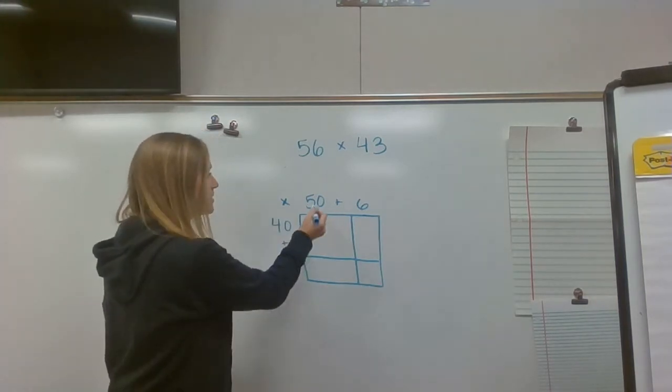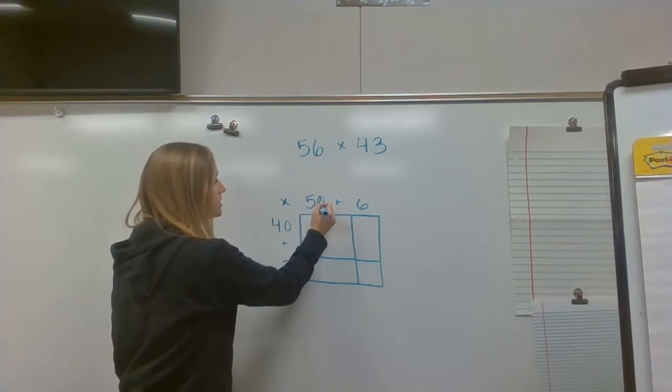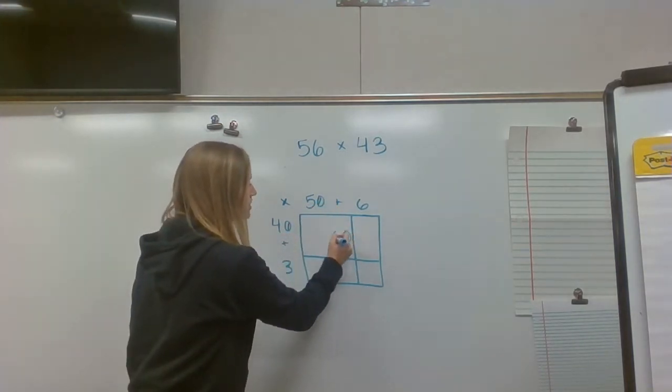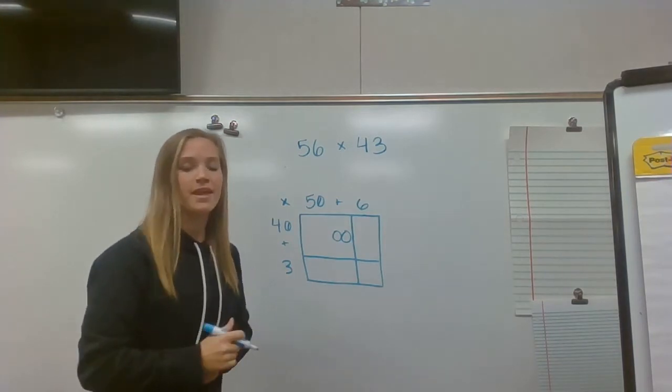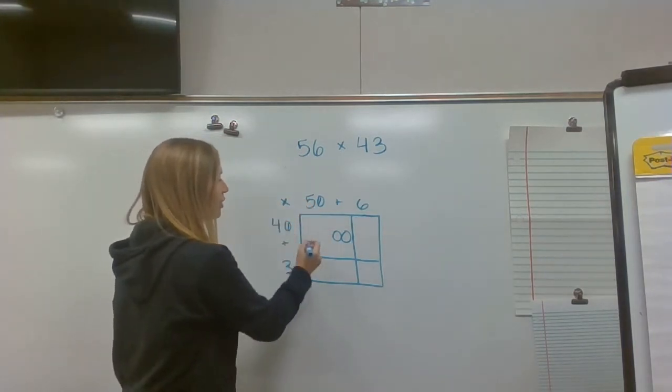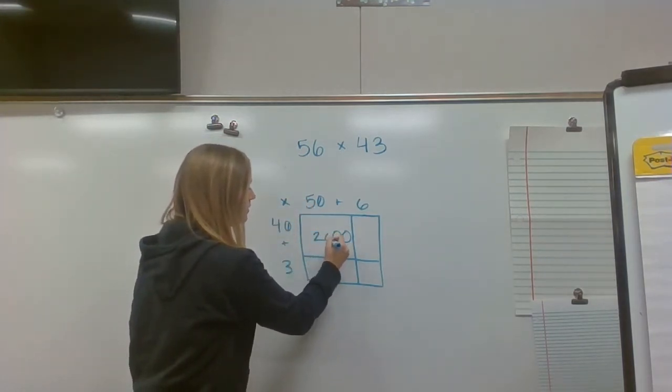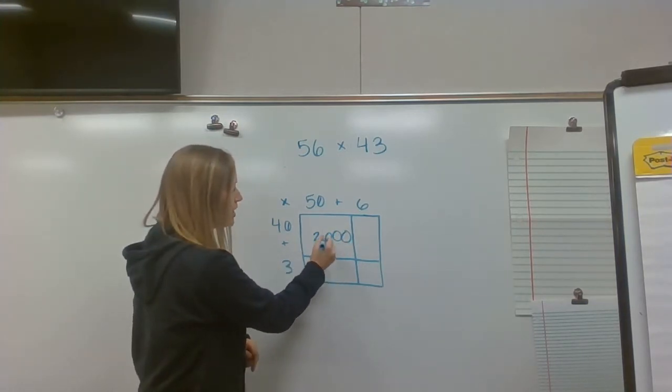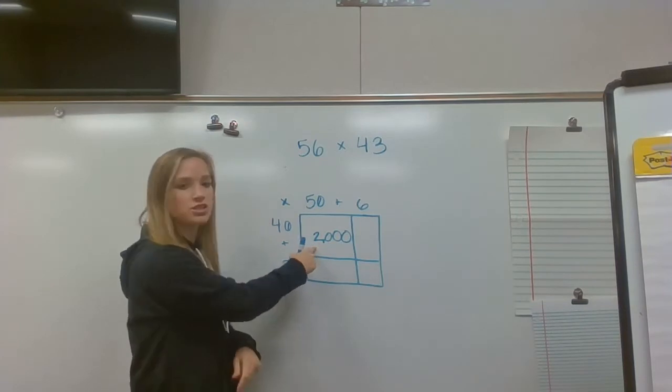So my first step is going to be 50 times 40. Now, I notice that there's a zero here and a zero here, so I can put two zeros in the box right away. The next thing I need to do is five times four, which is 20. Now, I know I have four place values here, so one, two, three. I need to put a comma because this is the start of a new period.